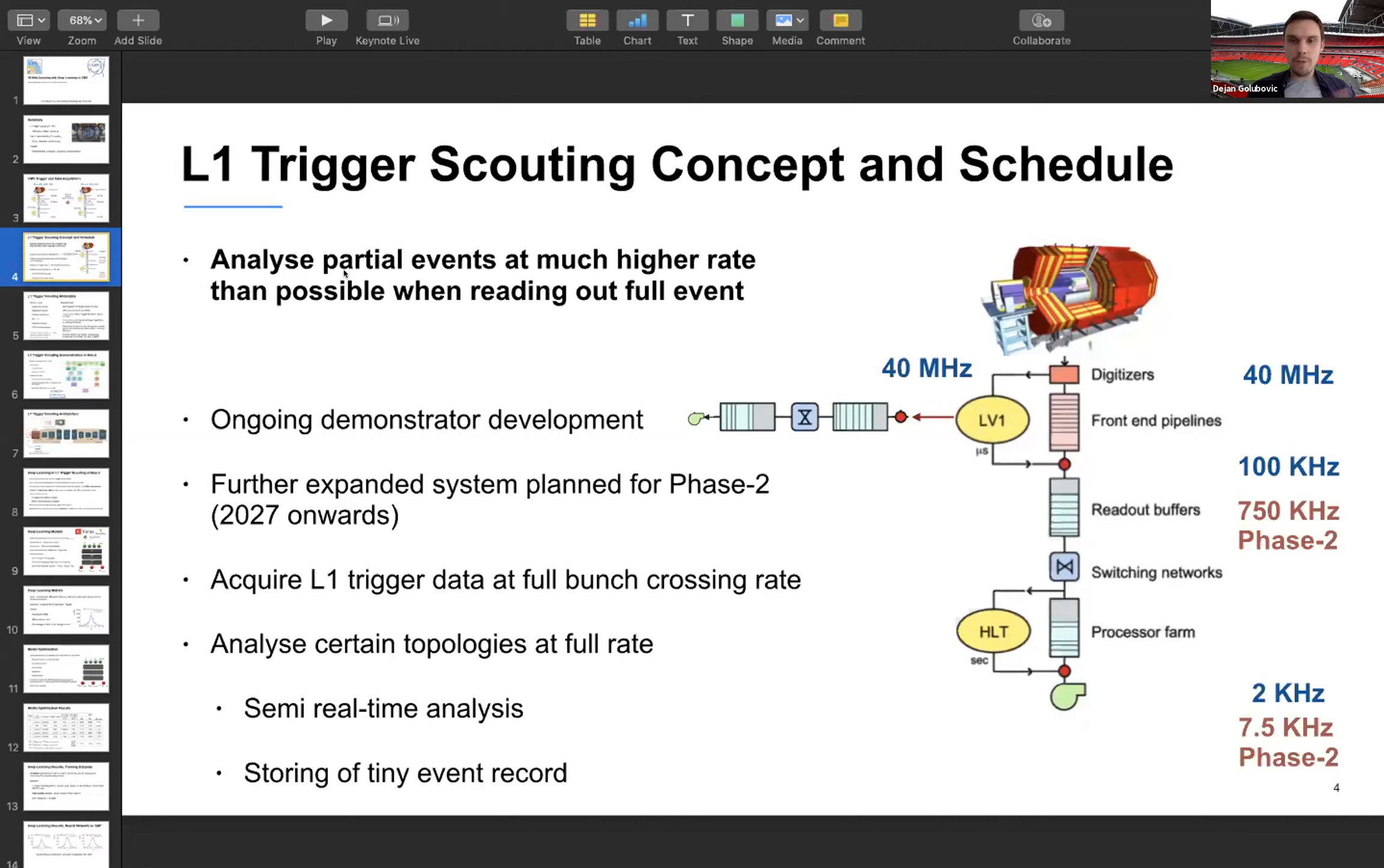Okay, so I was talking that the trigger system provides excellent physics performance. But the idea is can we find some physics processes that can benefit from an analysis at the full available statistics at the bunch crossing rate? And this is where the idea of scouting comes into place. So the idea is to capture data at the bunch crossing rate and store parts of the data and then have an analysis, essentially analyze partial events at much higher rate than when reading out the full event. The work on this project is towards the next demonstrator for run four and the previous demonstrator was in run two in 2018.